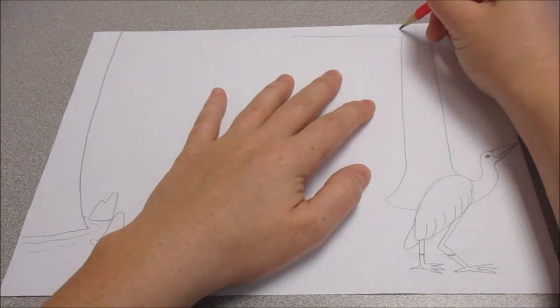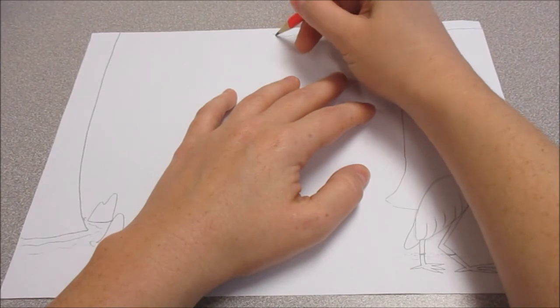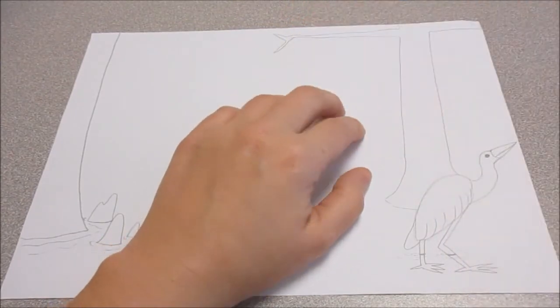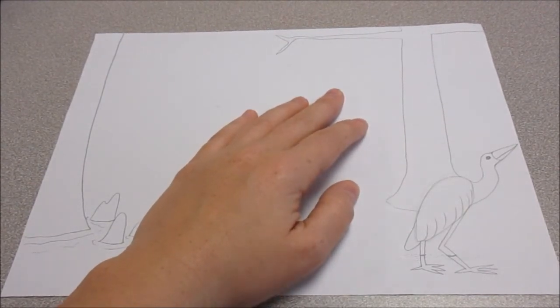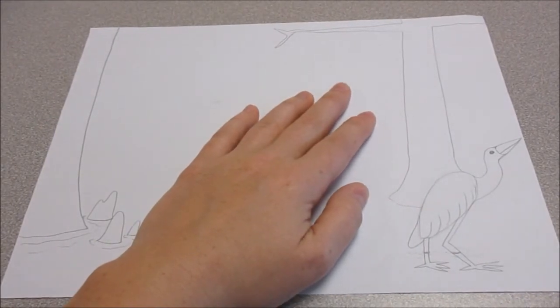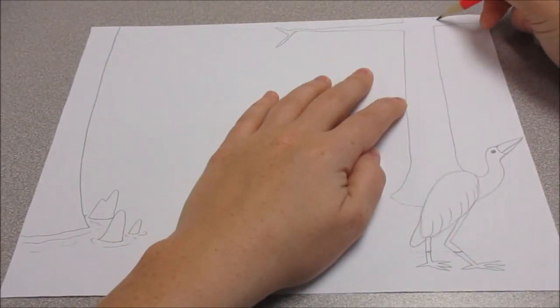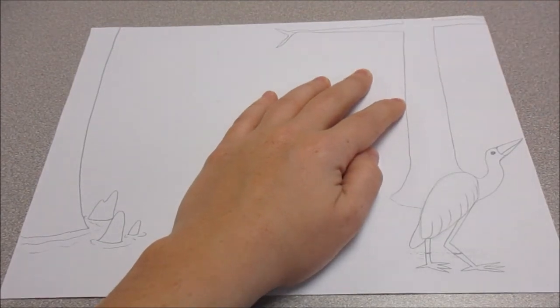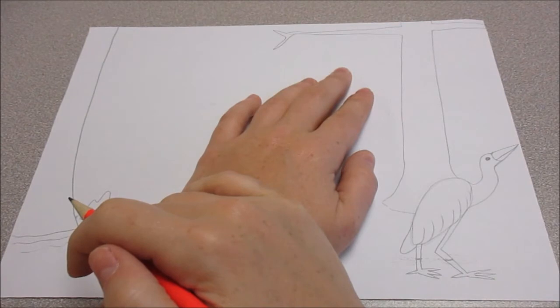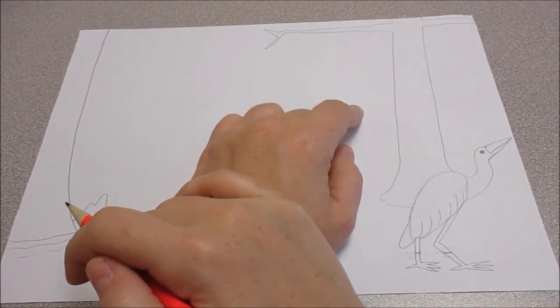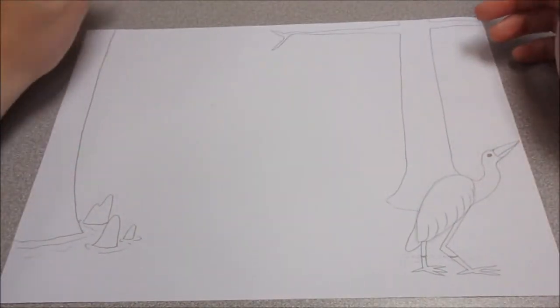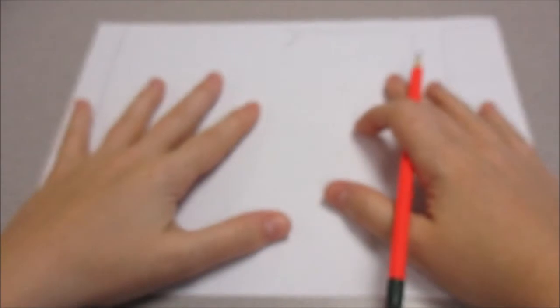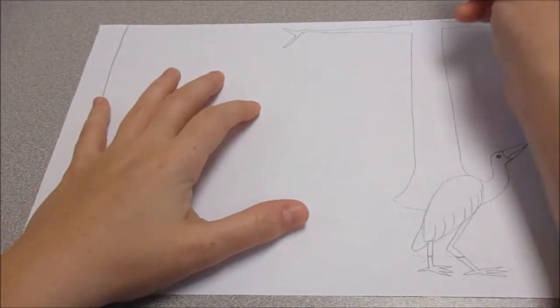Then finish that branch. Getting some little limbs coming off. Twigs. And I'm going to finish this one too. Just so that it's not so thick. Now the reason I wanted to put a branch here. One, just because it made an interesting composition. Kind of framing the picture.